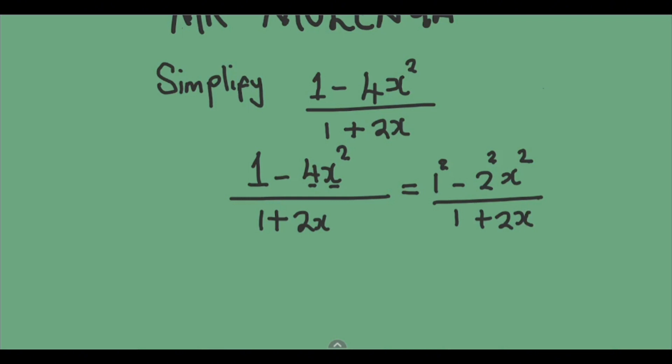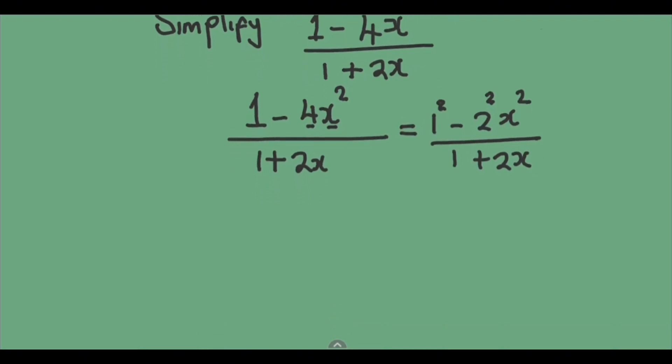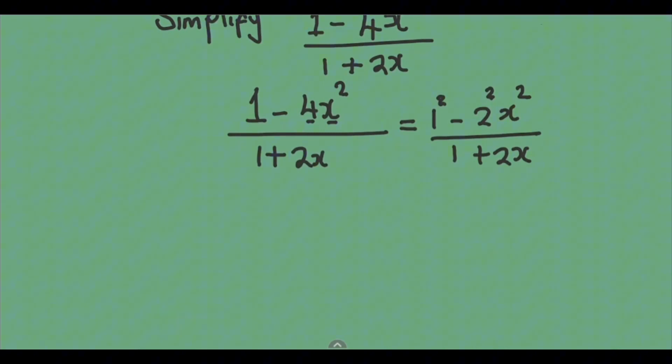The reason why we are doing this, we want to be able to simplify this question. You can see that this 1 can also be written as the power of 2, meaning that when you multiply the base 1 by itself twice, you are going to get 1.